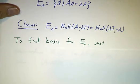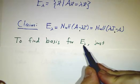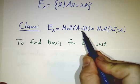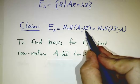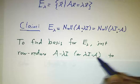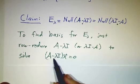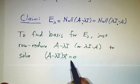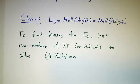So to find a basis for Eλ, you have to find a basis for a null space. And how do you find a basis for a null space? You row-reduce. So you have to take A minus λ times the identity, or λ times the identity minus A if you prefer, and you row-reduce it. And then you find all of the solutions to A minus λ times the identity x equals 0. And the claim is that that's the same thing as the eigenspace.